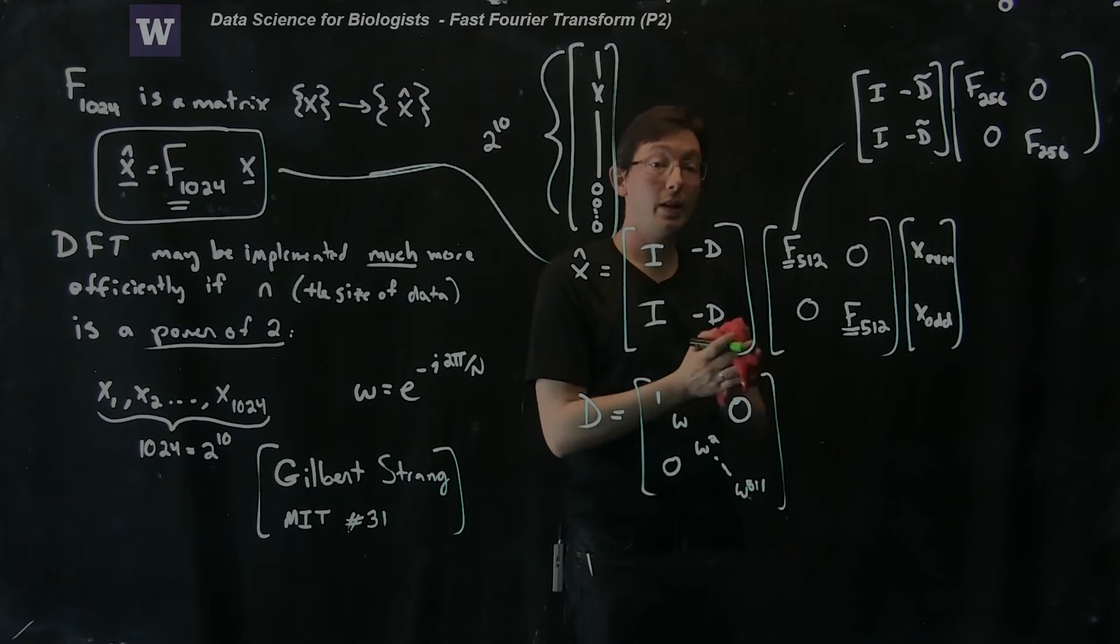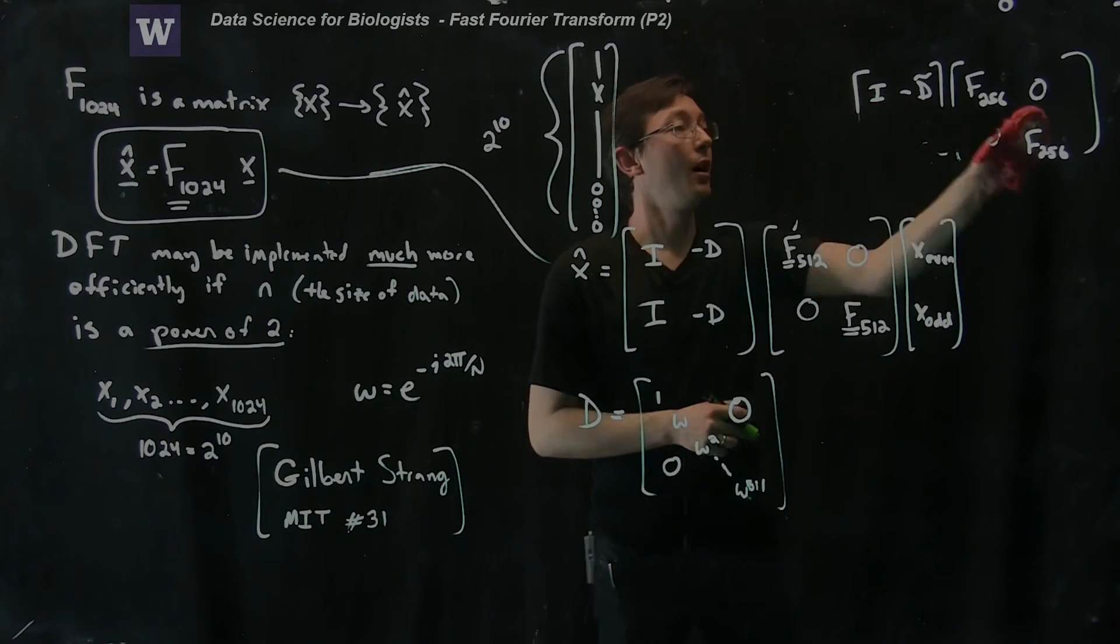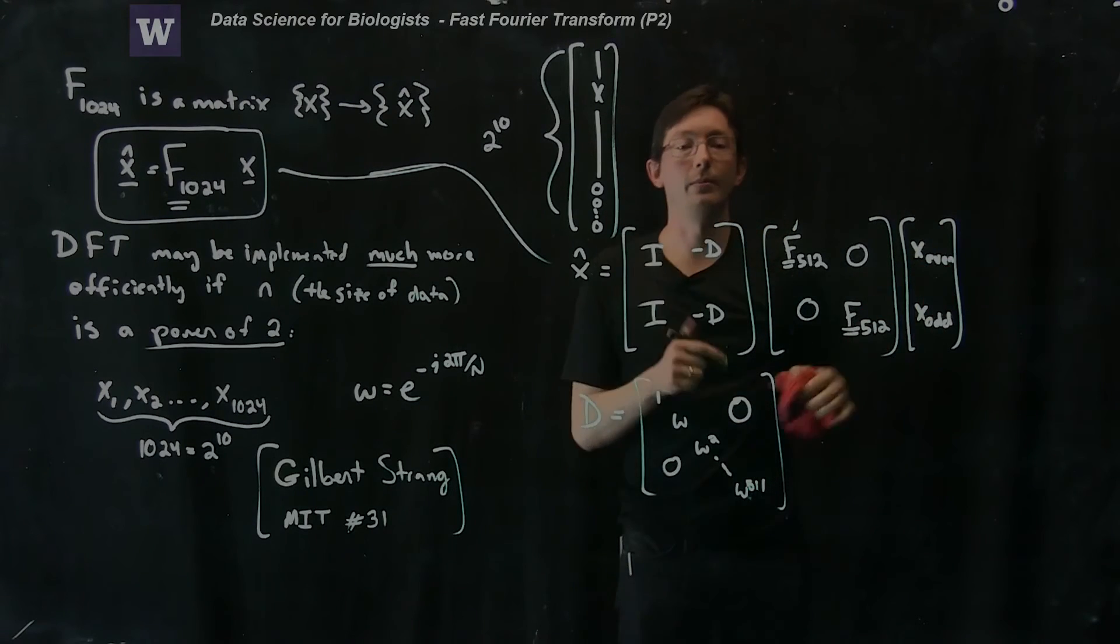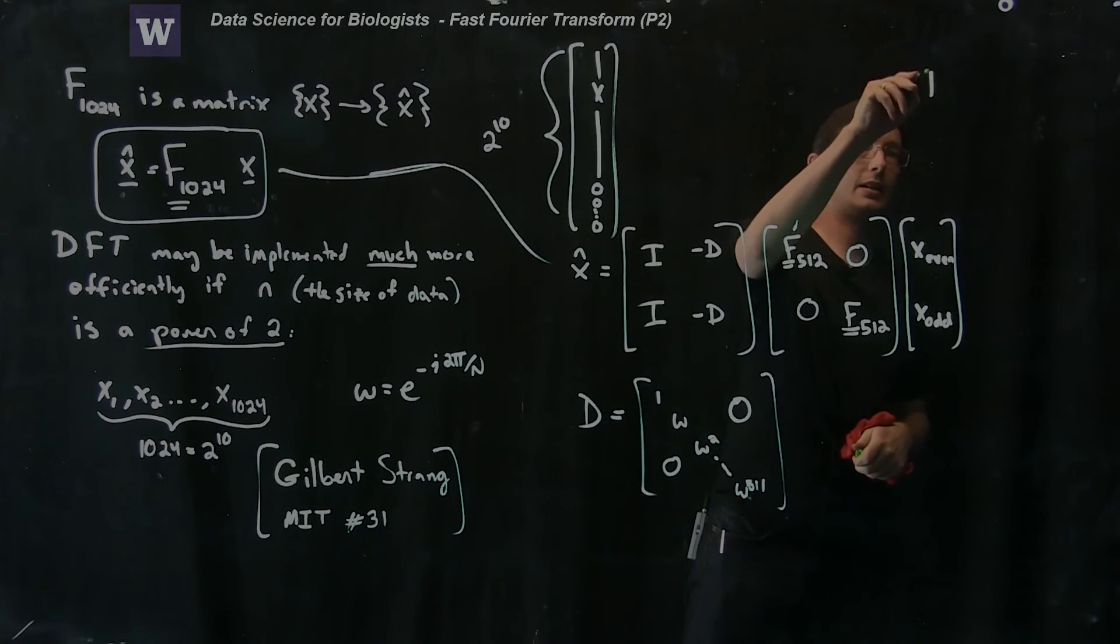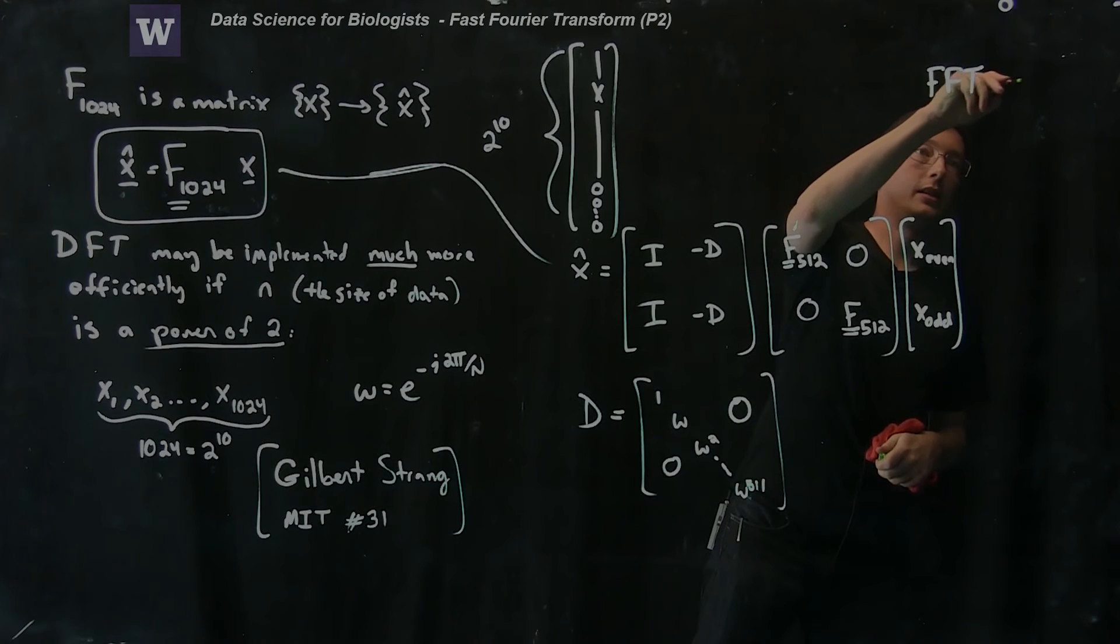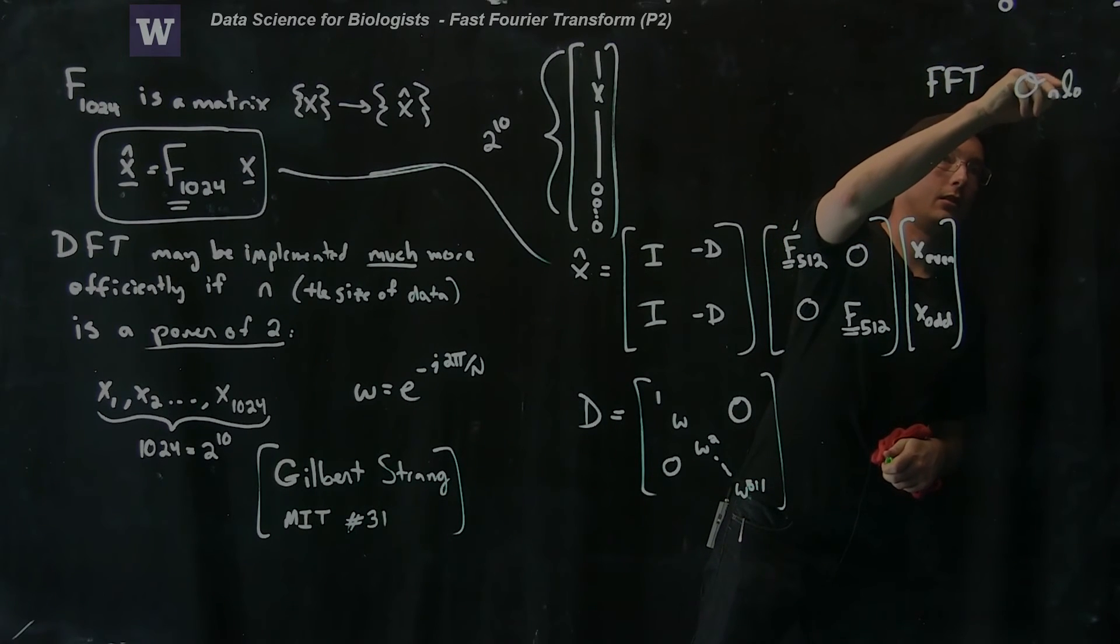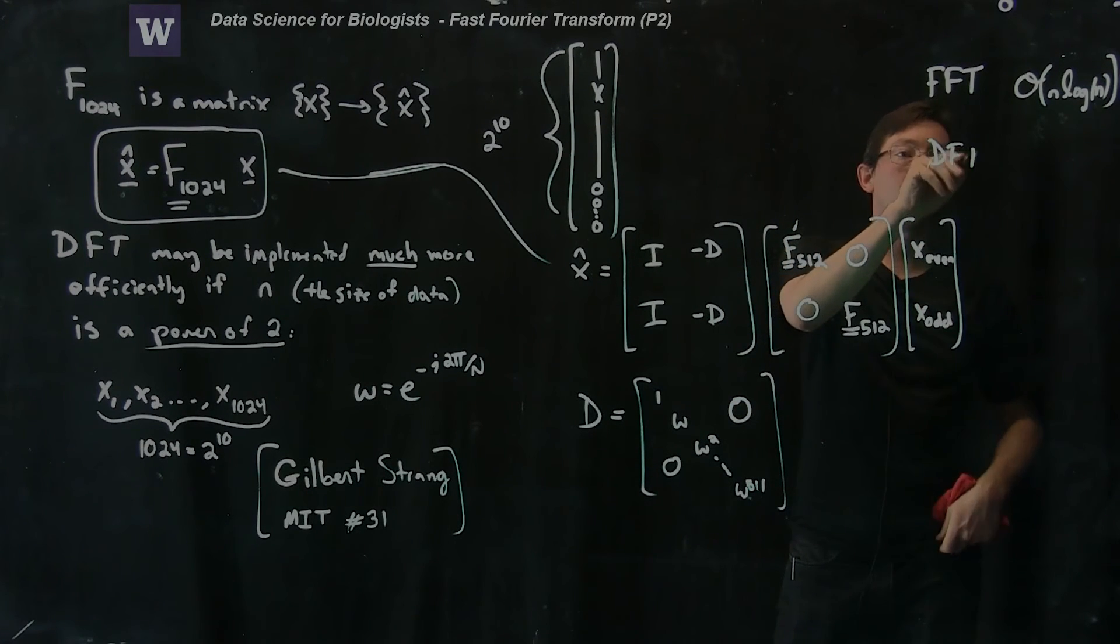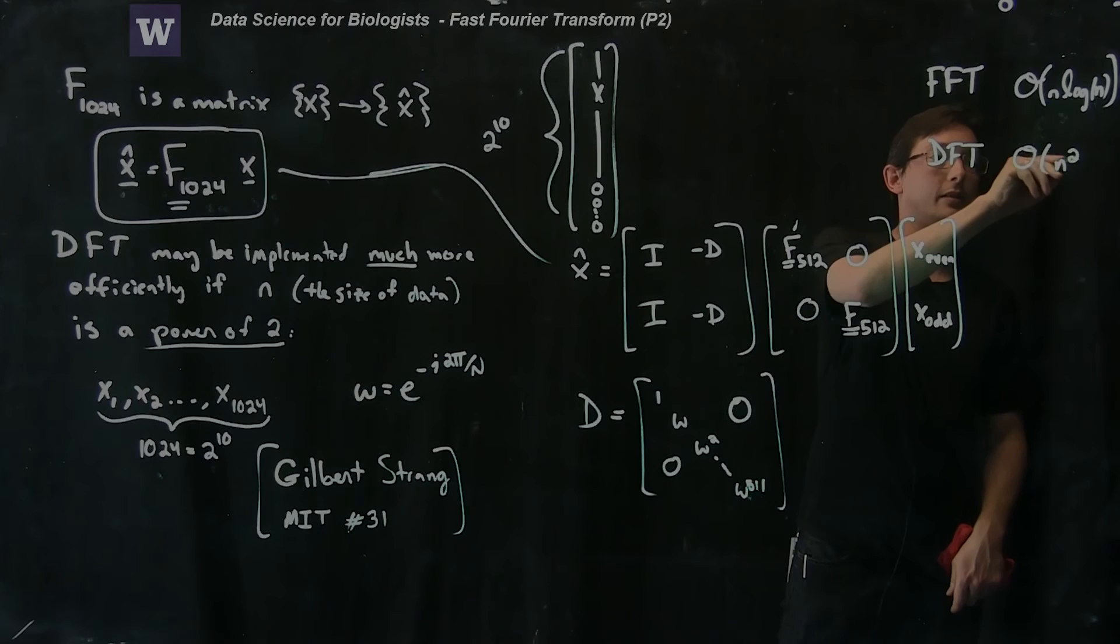The upshot, the thing that you really need to remember, the take home about the fast Fourier transform, is not actually how we compute it. It's the fact that FFT is order n log n. This is how much time it takes. And the regular old DFT is order n squared.